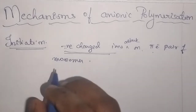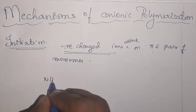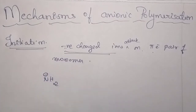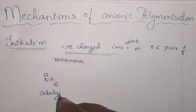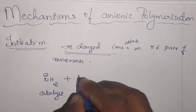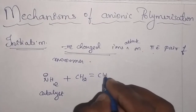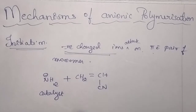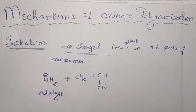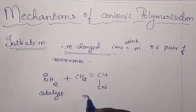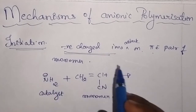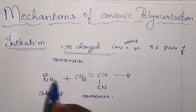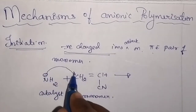Now if I take the negatively charged ion as NH2 negative, this is acting like a catalyst. And if you take the monomer CH2=CHCN — you can take any monomer, I have taken vinyl nitrile — this is your monomer. So the negatively charged ion will attack the pi electron pair of the monomer; it will actually attack this carbon.